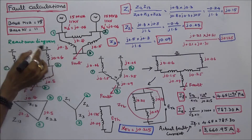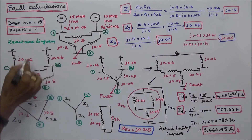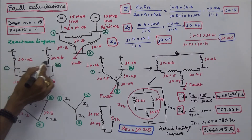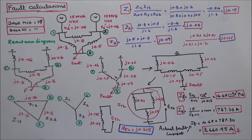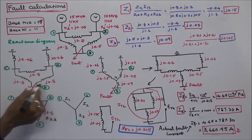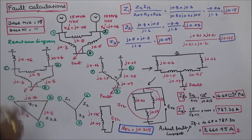The first step is to draw the reactance diagram. The generator reactance is J0.06, and this is J0.06. The branch reactances are J0.8, J0.5, and J0.3.